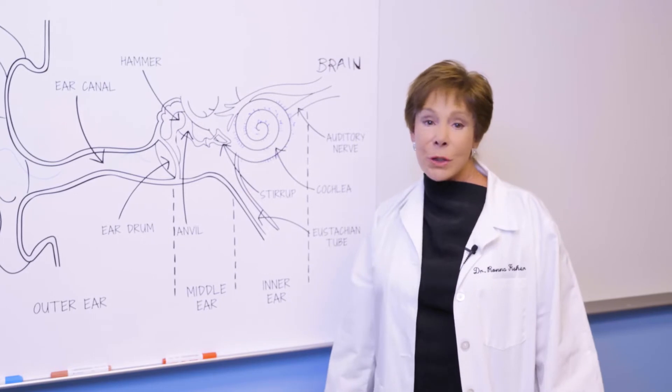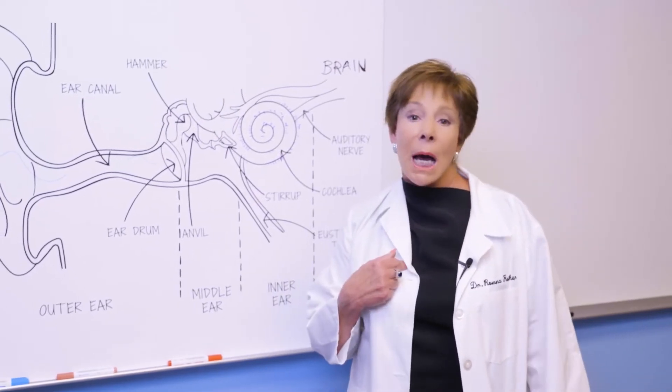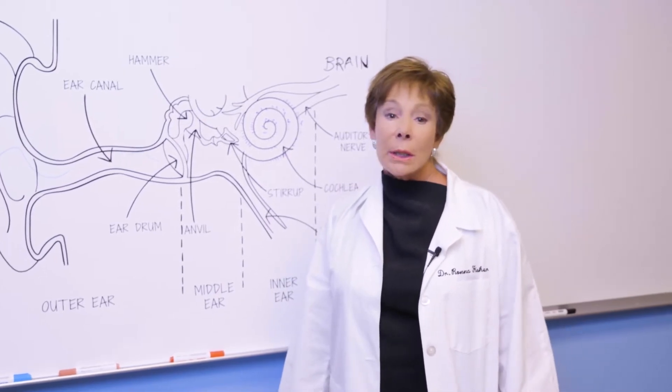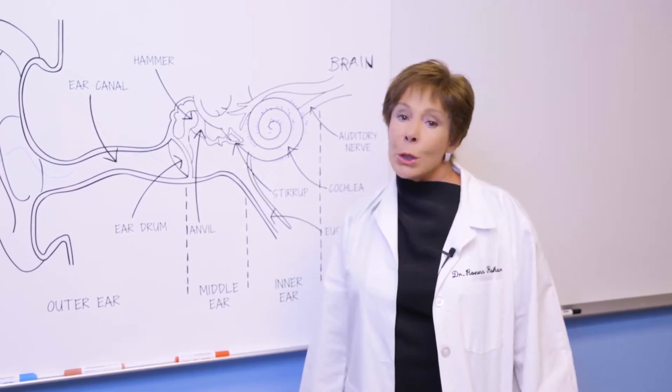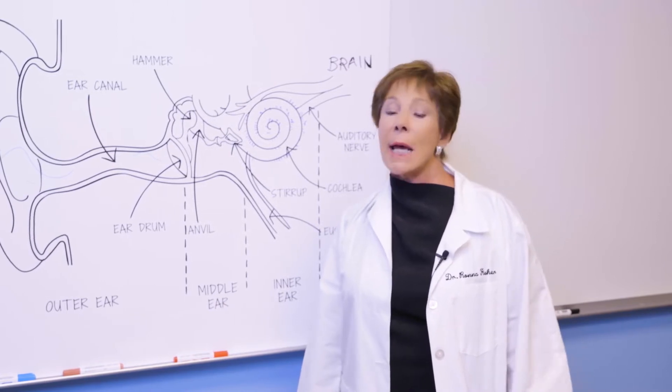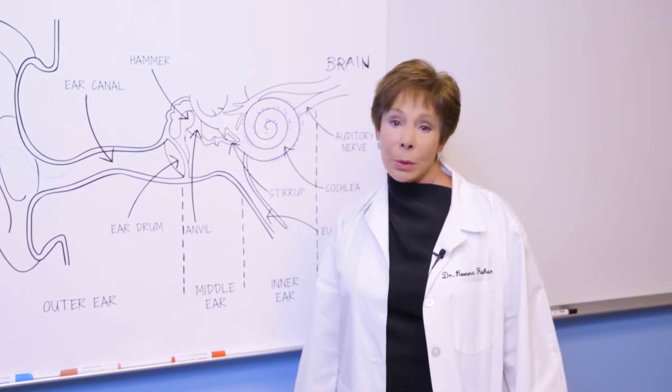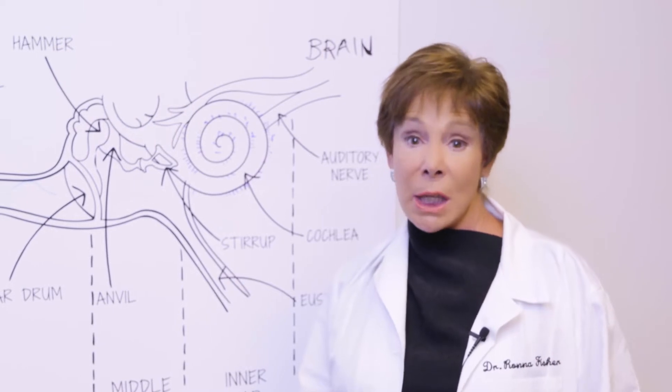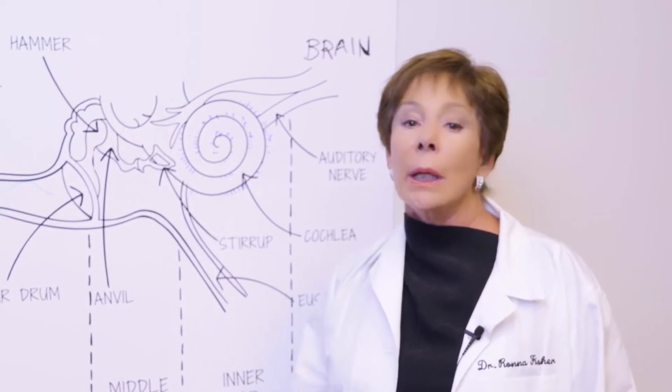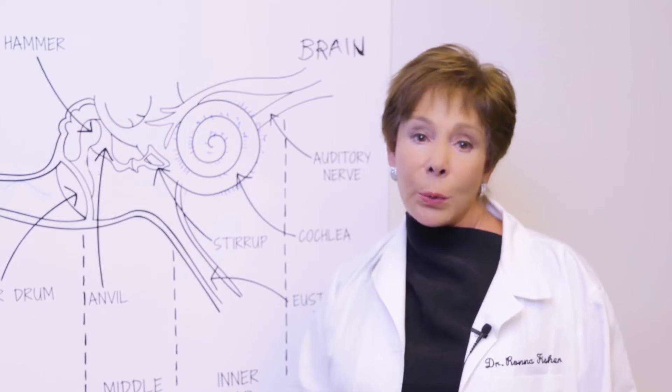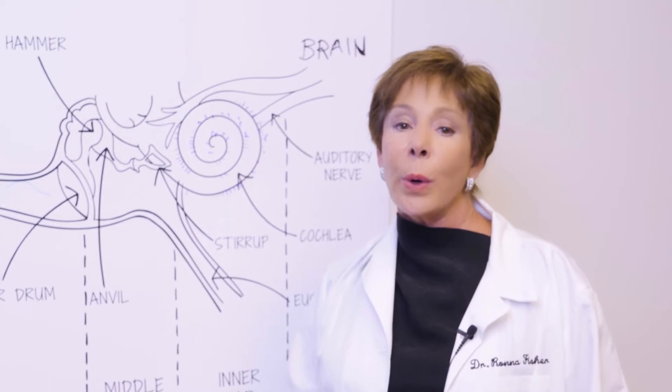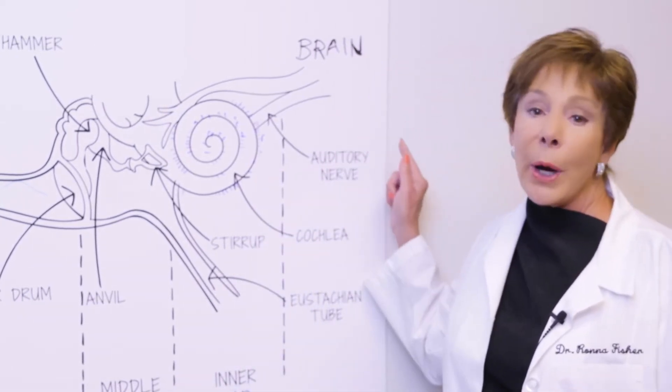Some people have tougher hair cells than others. Mine might die more easily than yours, and how tough they are or aren't tends to run in families. So if your parents and grandparents had hearing loss, there's a good chance you will too. The beep test we do tells us how much damage there's been to your hair cells. The more damaged and dead hair cells you have, the worse your hearing is going to look on that audiogram. When the hair cells are damaged or dead, they can't send the correct message up the auditory nerve to the brain.